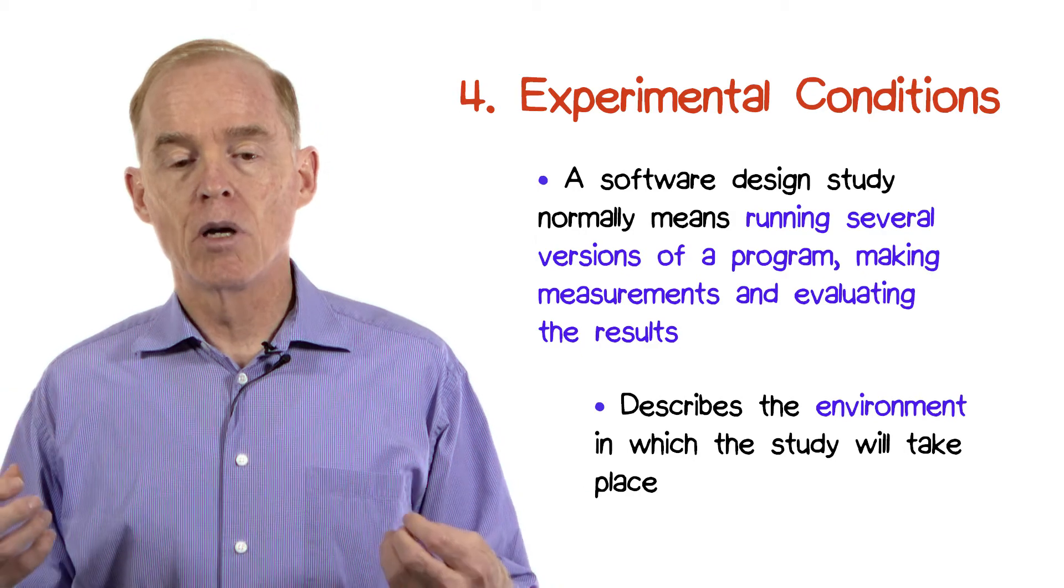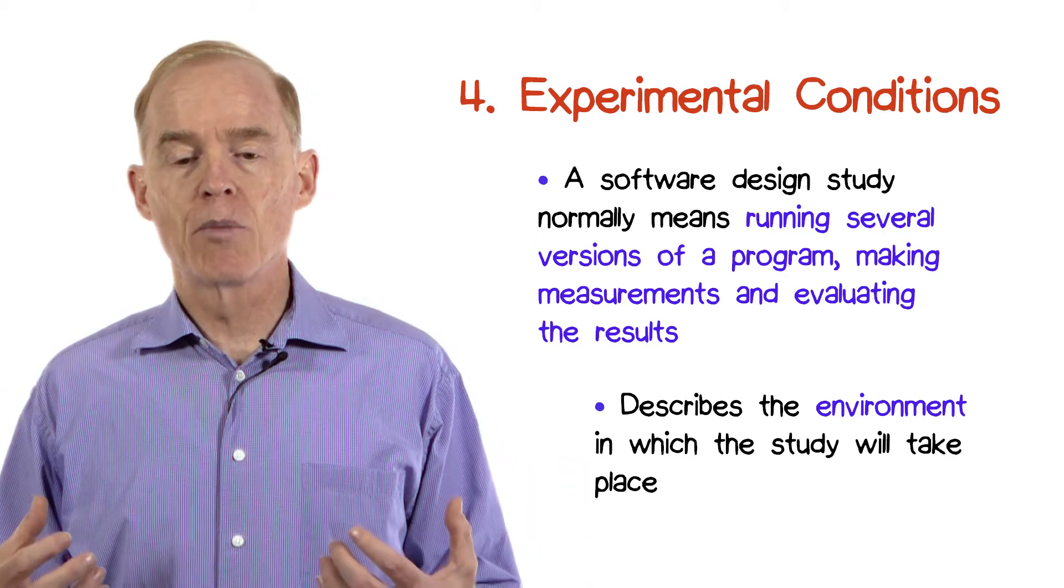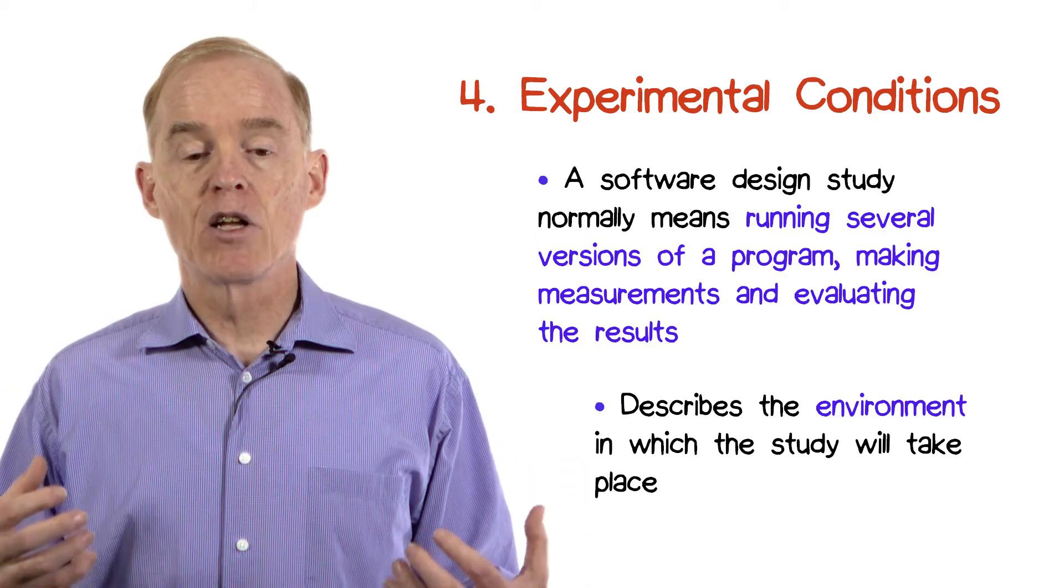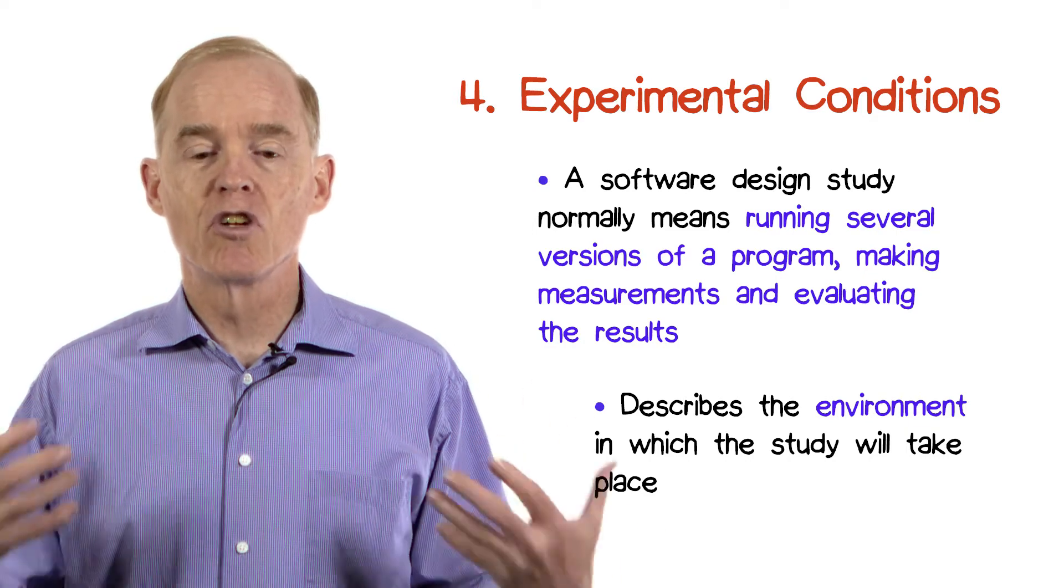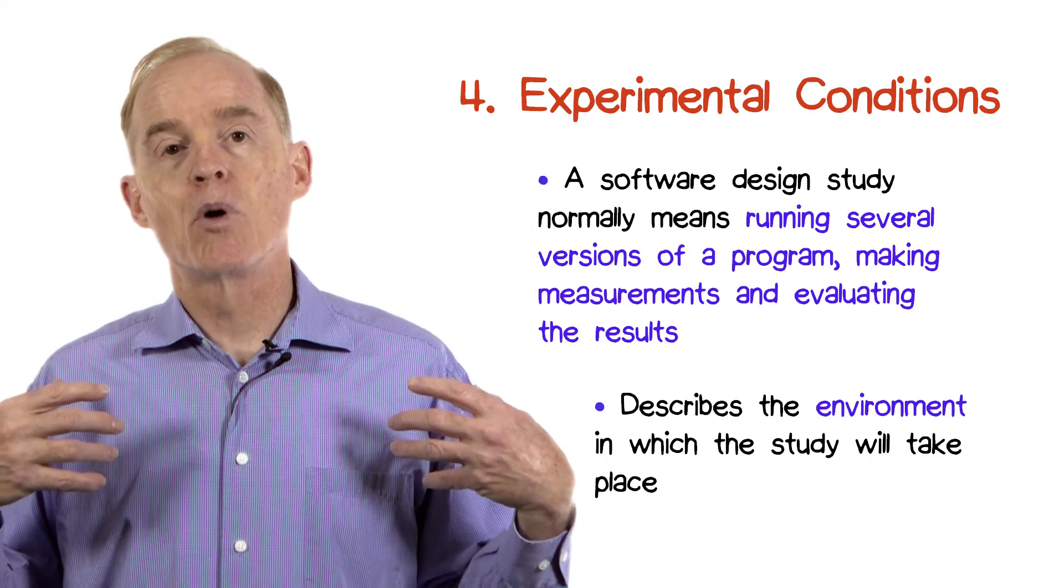Where relevant, this also includes the network, the build and execution parameters, input files, and confounding factors such as other users on the machines at the same time or other processes going on.